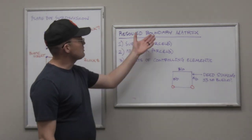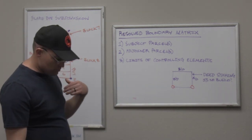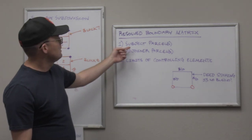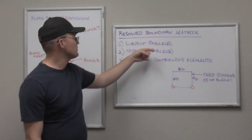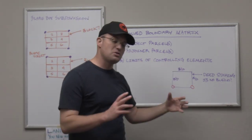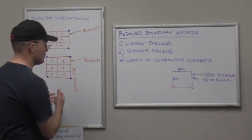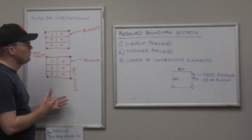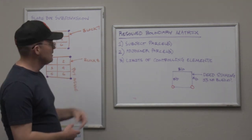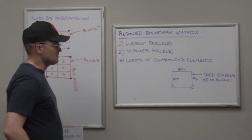The resolved boundary matrix is a tool to help you properly resolve the boundaries of a parcel. It has three layers: the subject parcel or parcels, the adjoiner parcel or parcels, and the limits of controlling elements — and each of those has a different footprint. We're going to do a lot-block example and a public land survey system example, and I'll show you how each of these looks and how that might impact your fee estimate.